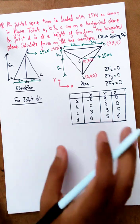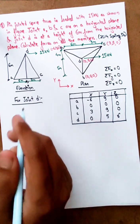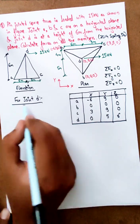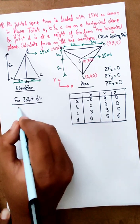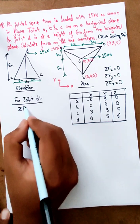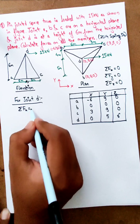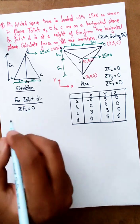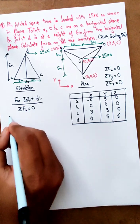Now, for joint D, we apply equilibrium. Summation Fx equals 0.